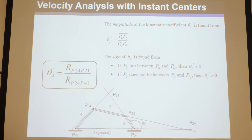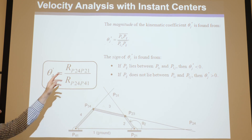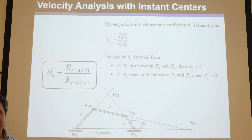There is a general rule for knowing which ratios to measure — which instant center distances to divide — and that will be explained next.